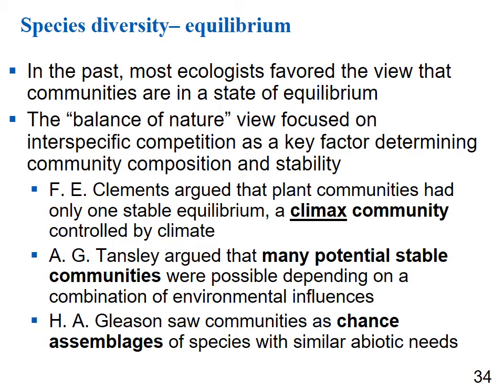Historically, many ecologists thought communities were in equilibrium. F.E. Clements argued plant communities had one stable climax community controlled by climate. A.G. Tansley argued there are many potential stable communities depending on a combination of environmental influences. H.A. Gleason saw communities as a chance assemblage of species with similar abiotic needs. The key takeaway is that there are different ideas about how a particular community develops in a particular area.